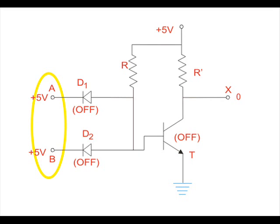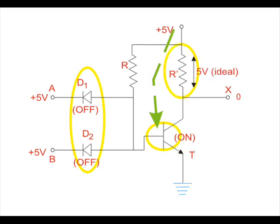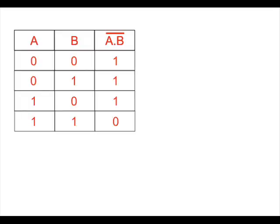When both inputs are given +5V, i.e., logical 1, both diodes are in OFF condition, and hence the supply voltage will appear at the base terminal of transistor T, which makes it switch ON, and the supply voltage gets passed to ground through the transistor. Ideally, the entire supply voltage +5V will drop across resistor R, and output terminal X will get ideally 0V; hence the output is considered logical 0. Therefore, the output is only 0 when and only when both inputs are +5V or logical 1.